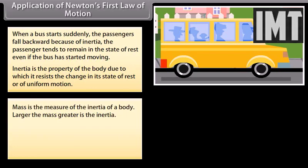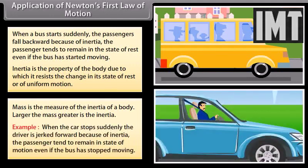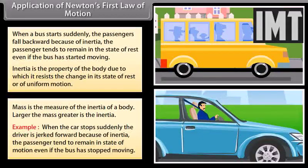Mass is the measure of the inertia of a body. Larger the mass, greater is the inertia. Example: when the car stops suddenly, the driver is jerked forward because of inertia. The passenger tends to remain in state of motion even if the bus has stopped moving.